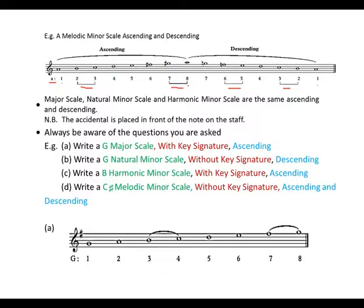Major scale, natural minor scale, and harmonic scale are the same descending and ascending. Note: the accidental is placed in front of the note on the staff — remember that. Always be aware of the questions you are asked. We are going to be looking at examples that tell us exactly how to write our scales.